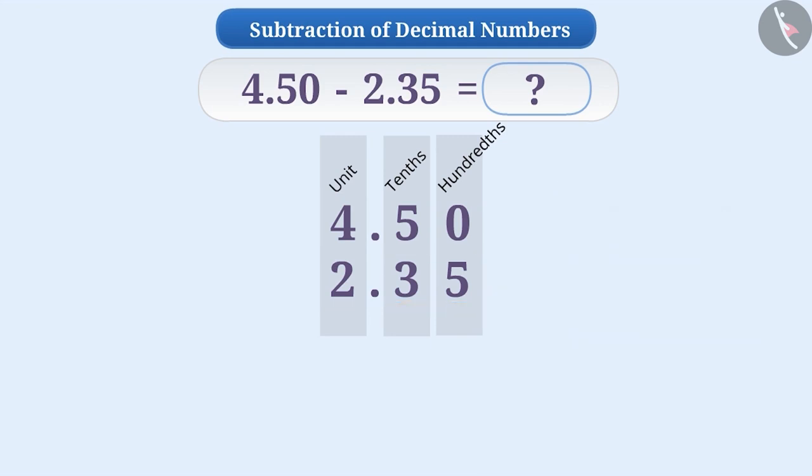As we have arranged the numbers one below the other, now we can subtract these numbers. You might have remembered that we move from right to left while doing subtraction. So first, we will subtract 5 from 0. But we cannot do it because 0 is smaller than 5. Therefore, we will borrow 1 from the digit left to the 0. By doing so, the value of the digit in the tenths place will be reduced by 1. That means, it will be reduced to 4 from 5.